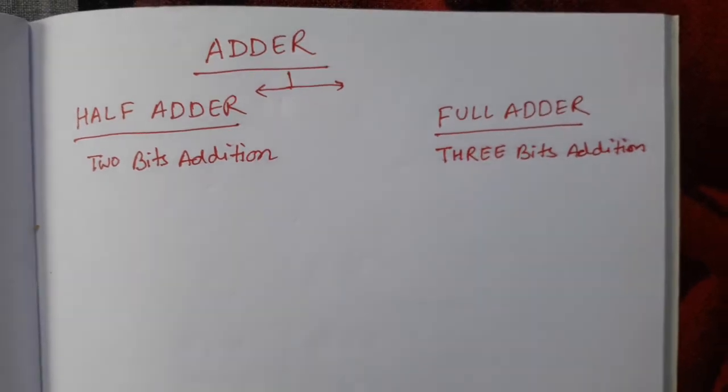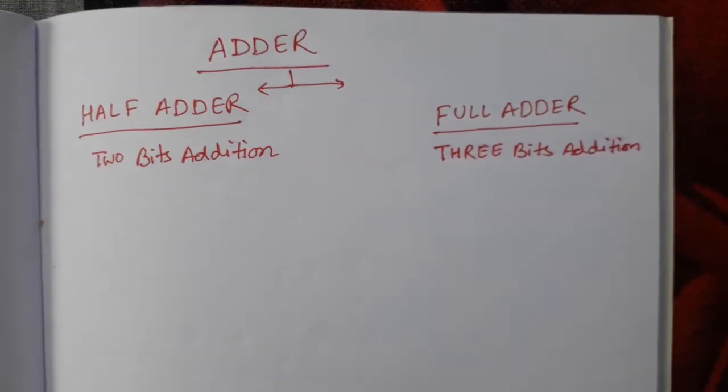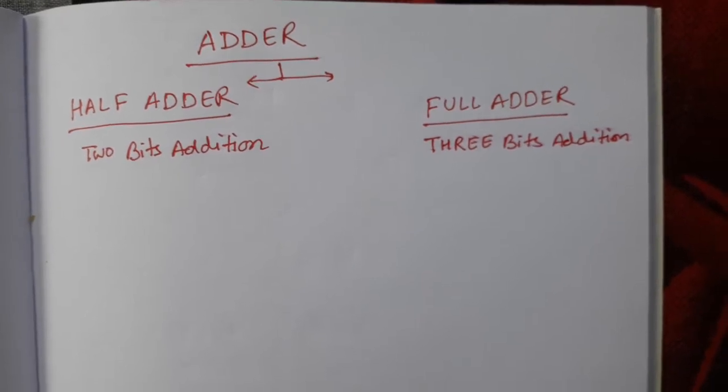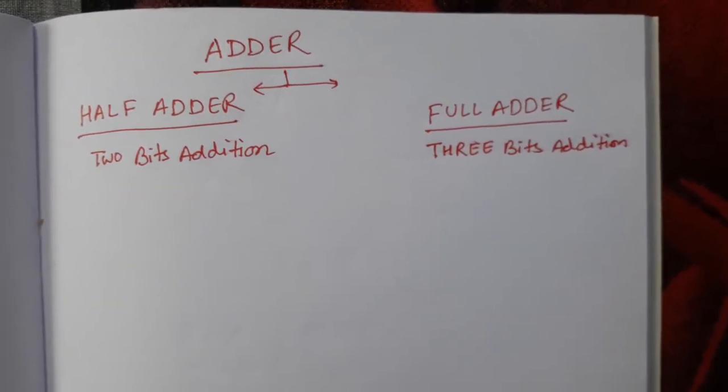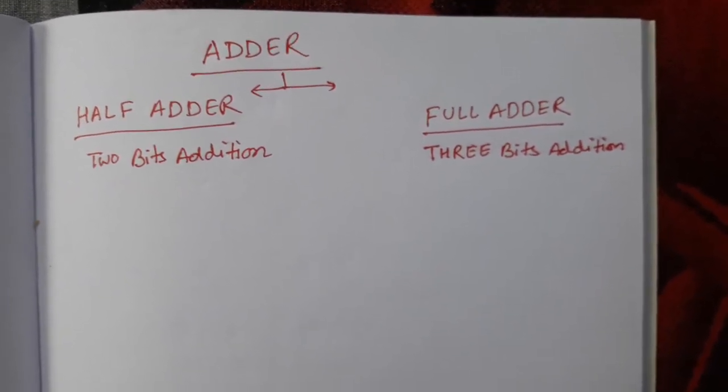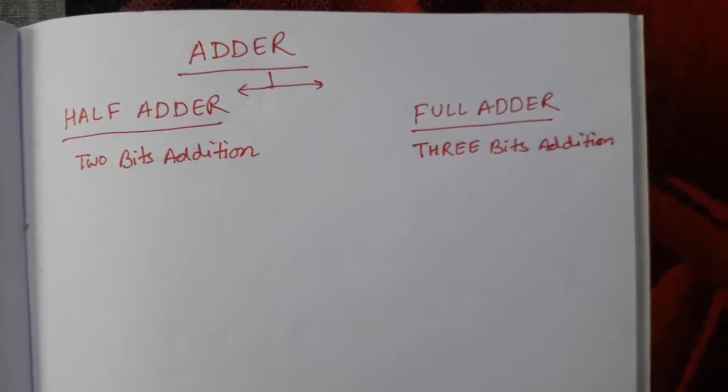So today our topic is adder. Adder means to add 2 or 3 bits. To add bits, we use adder in boolean logic. Here we are having two types of adders.